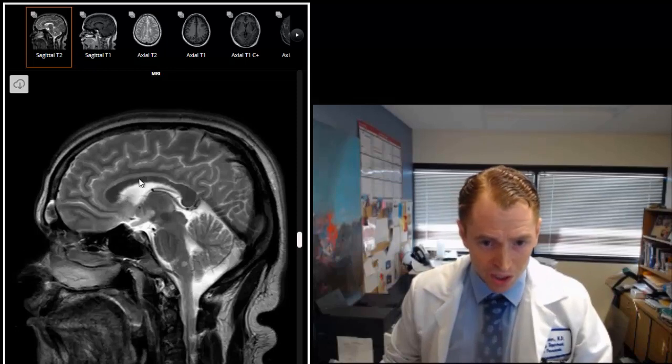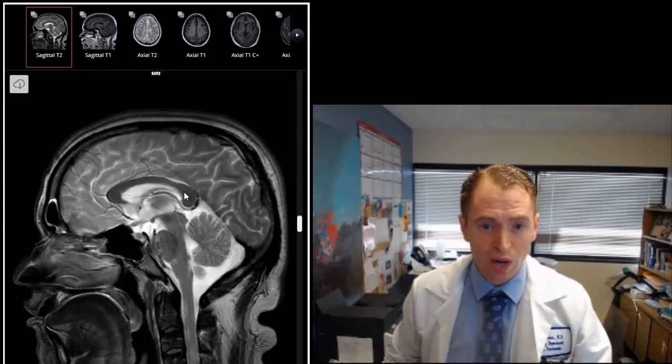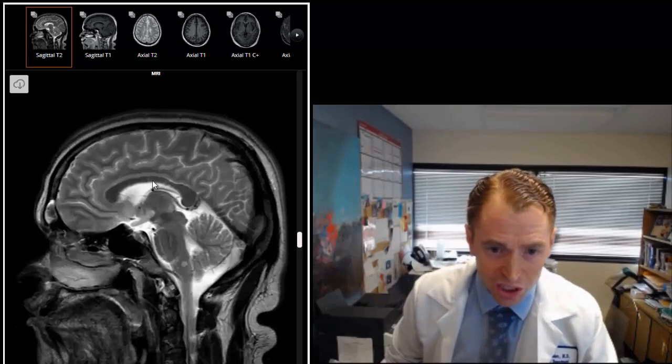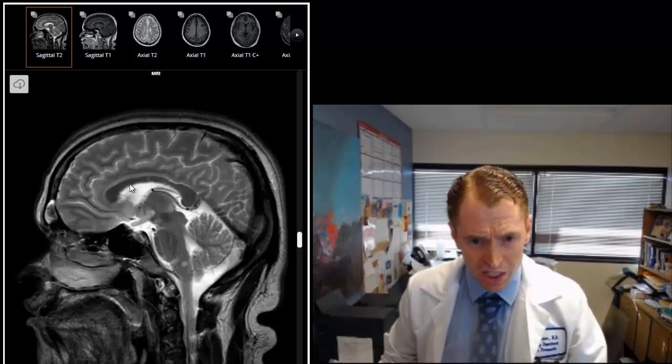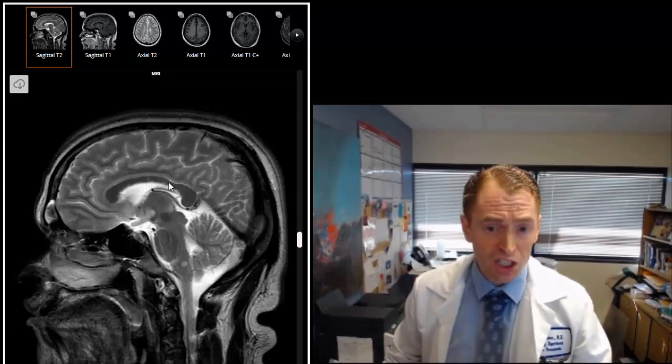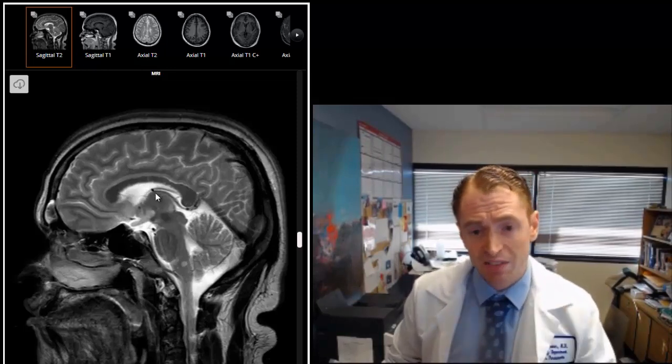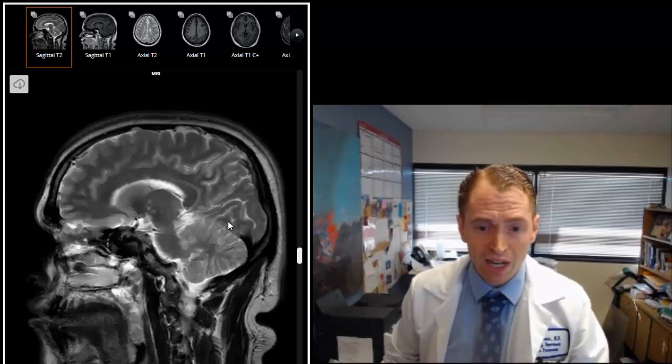This is the corpus callosum which is the white matter tract that connects the two halves of the brain. You can see there's some lesions in the corpus callosum. Lesions here often don't cause major symptoms although the corpus callosum is thought to be related to integrating multiple functions in the brain. People with a lot of corpus callosum damage and atrophy can have a lot of difficulty with certain aspects of cognitive function and multitasking.